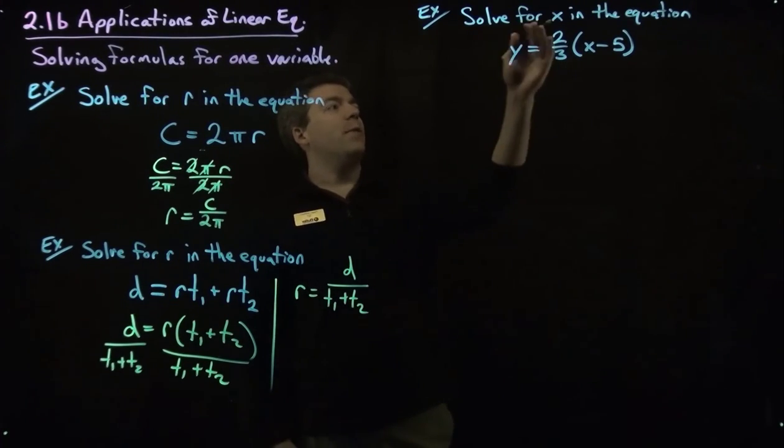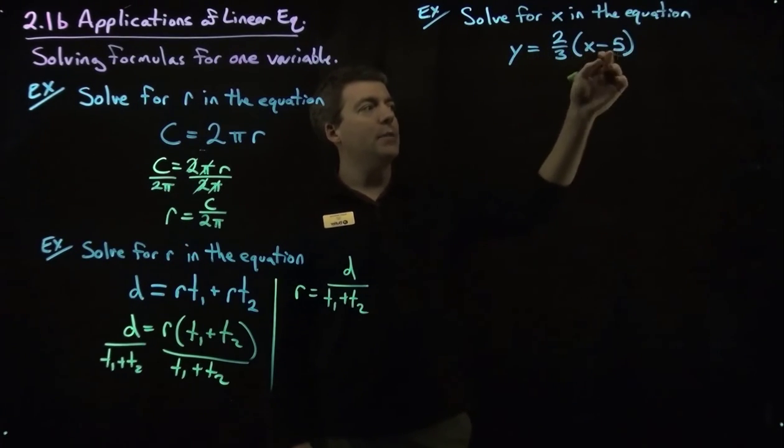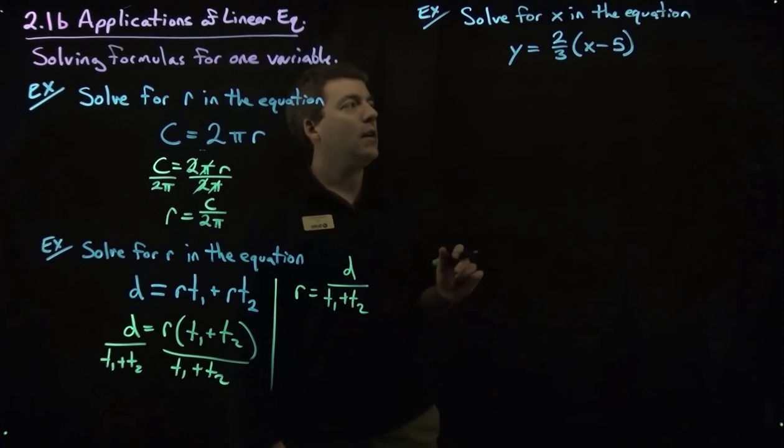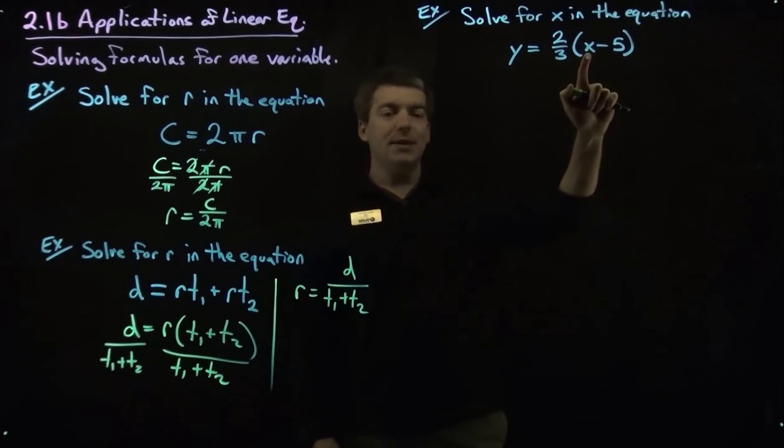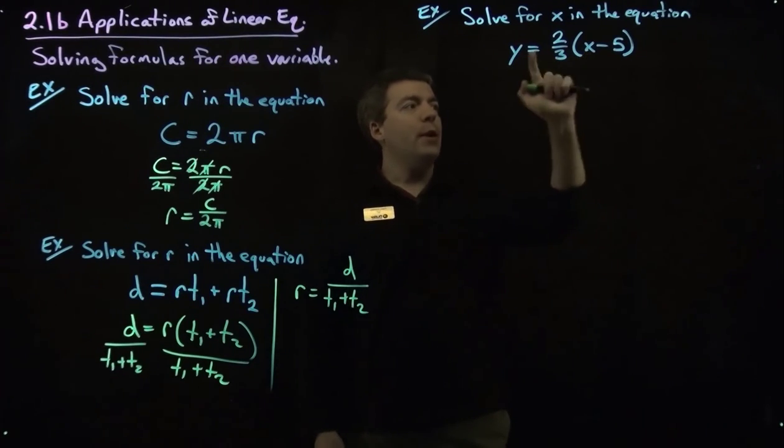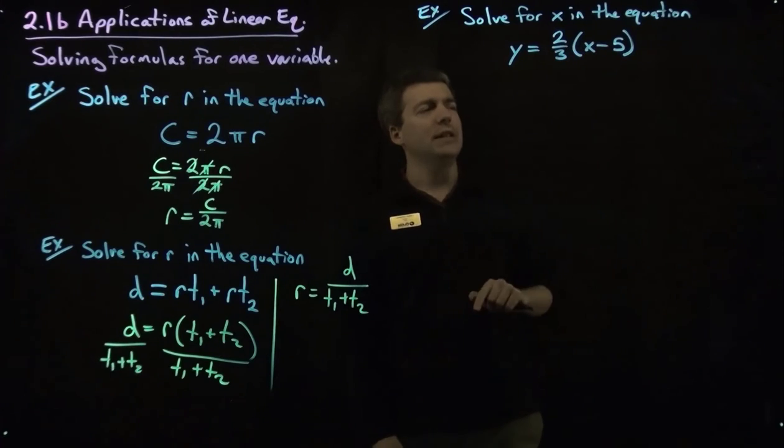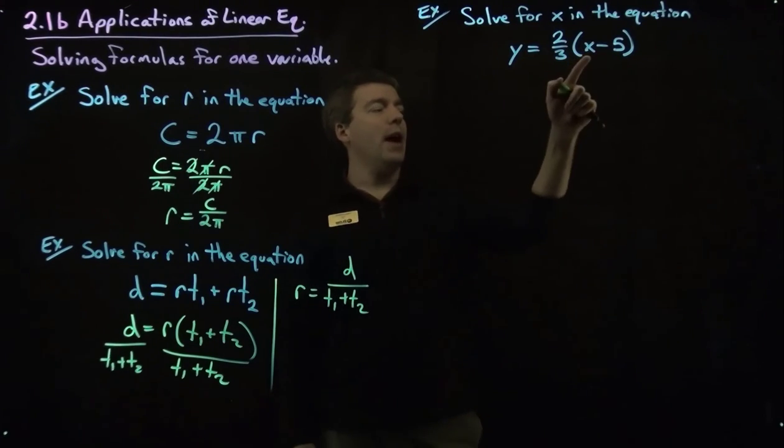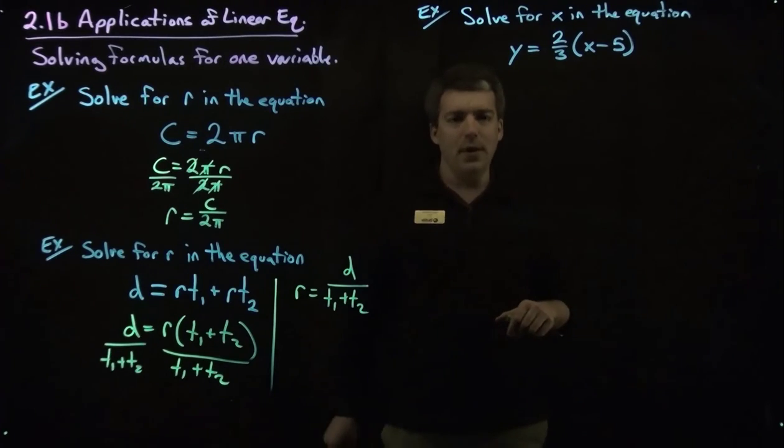We're asked to solve for x in the equation y equals 2 thirds times the quantity x minus 5. So here we're trying to get the x by itself. And if we look at this equation you can see that it's trapped, so to speak. It's trapped inside this parentheses, we need to break it out so that we can get it by itself using the same procedures that we've done over here.